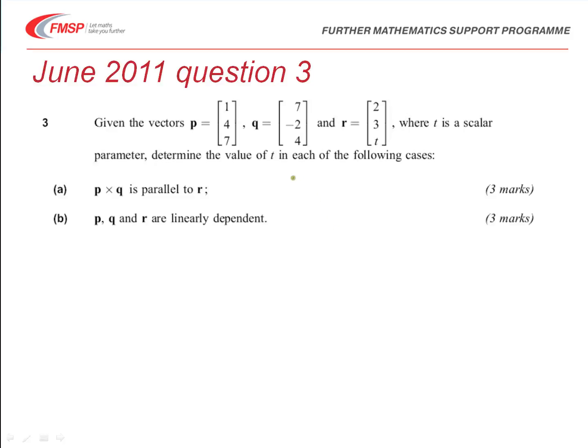This question gives us three vectors P, Q, and R. In the first part we're told that P cross Q - remember that's the vector product of P and Q, which is perpendicular to P and Q - that answer is parallel to R.